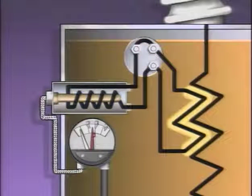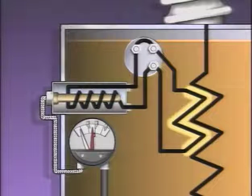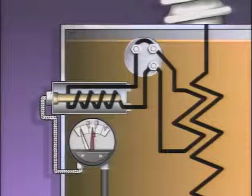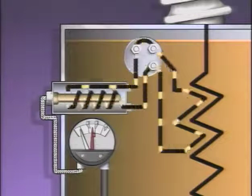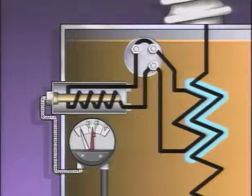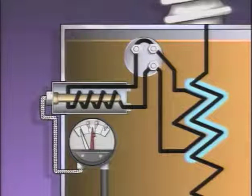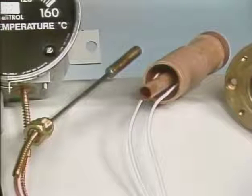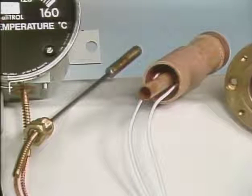The current transformer provides a current that's proportional to, but much lower than, the load current of the power transformer. The function of the current transformer and the heating element is to simulate the temperature rise created by the power transformer winding. The winding temperature is determined by the load on the winding, the thermal characteristics of the winding, and the temperature of the transformer oil. So the heat created by the heating element and the heat of the transformer oil both act on the temperature sensitive bulb.